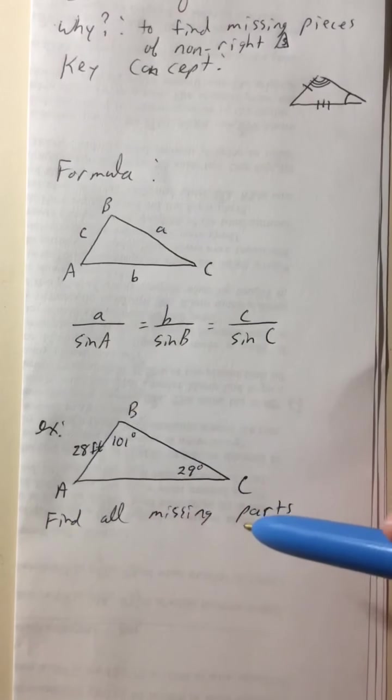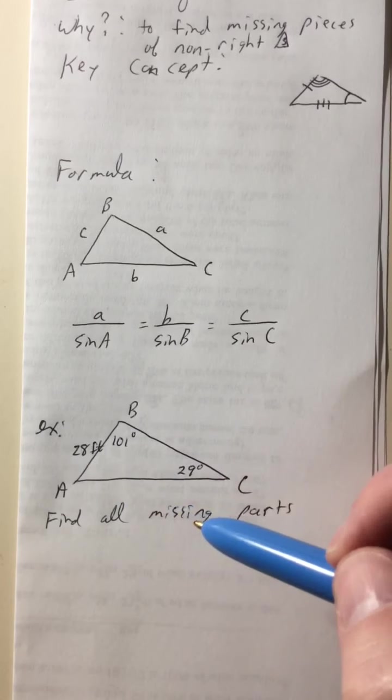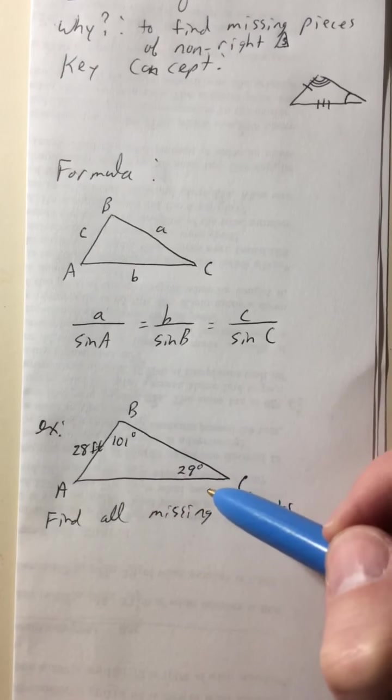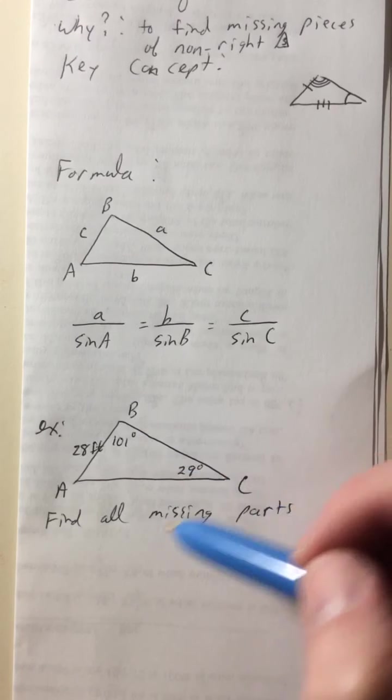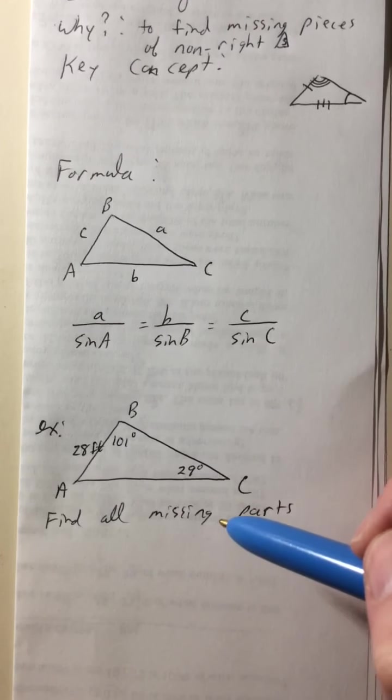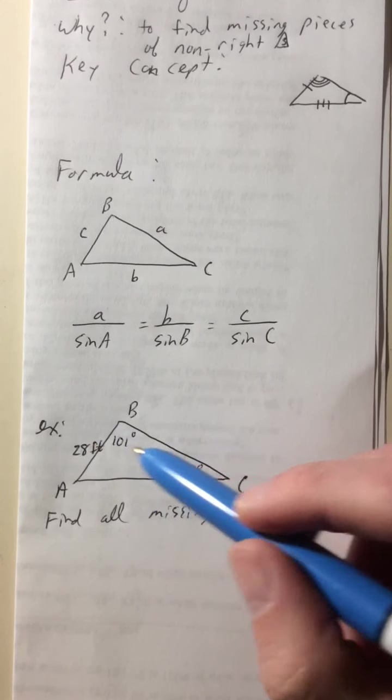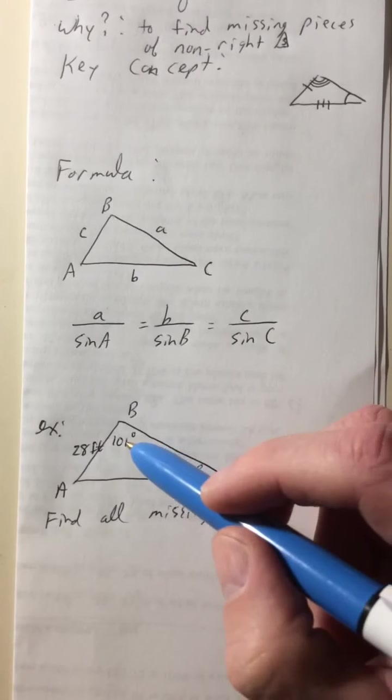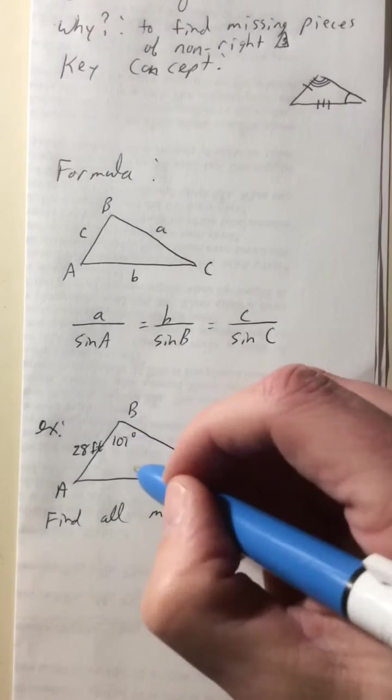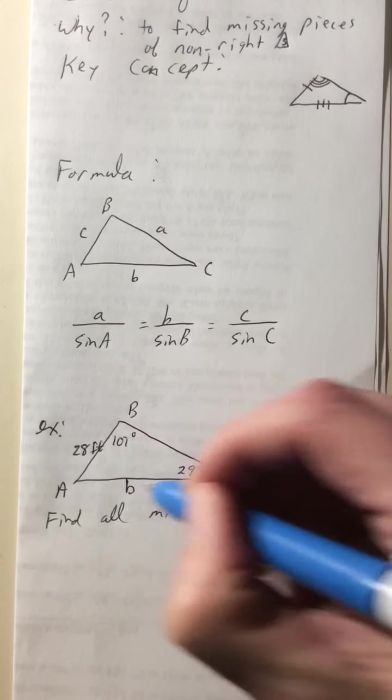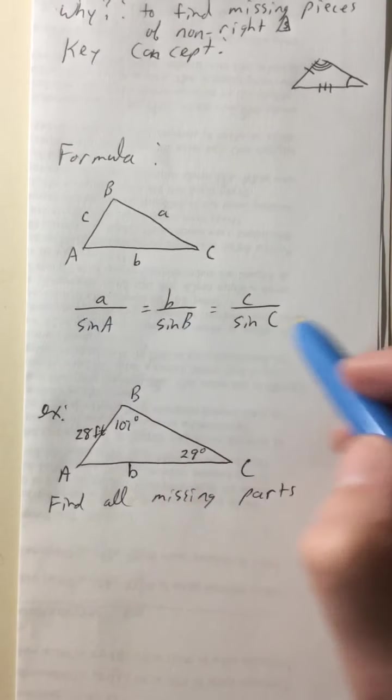Okay. So here we are. So we got ABC, and we know that C is 28, and angle C is 29 degrees, and angle B is 101 degrees. We need to find all the stuff. Well, we know that we want to match up the side and the angle across from it. So those guys go together. And we know that we want to match up again, the angle and the side that goes across from it. So we're actually needing to have side B right here.